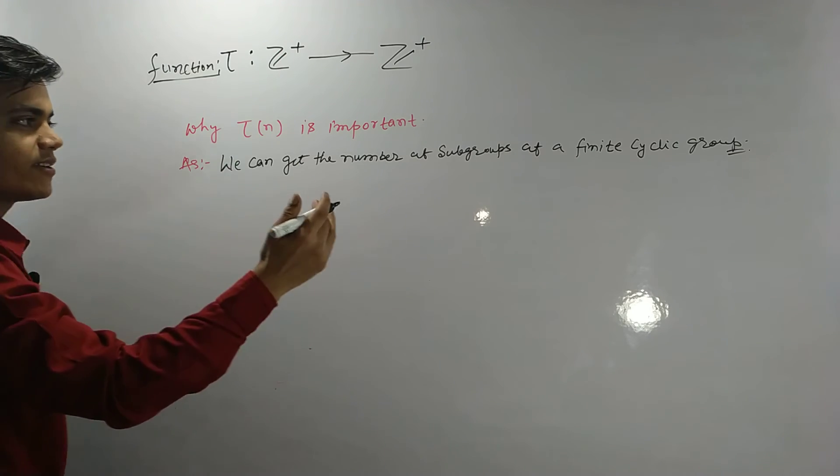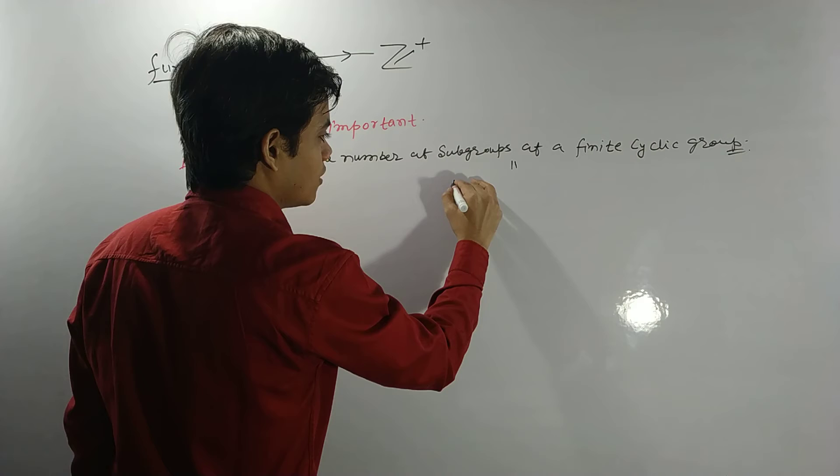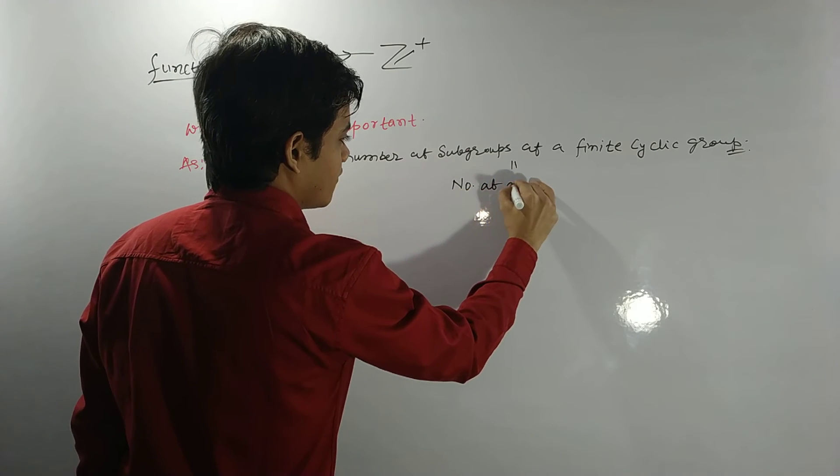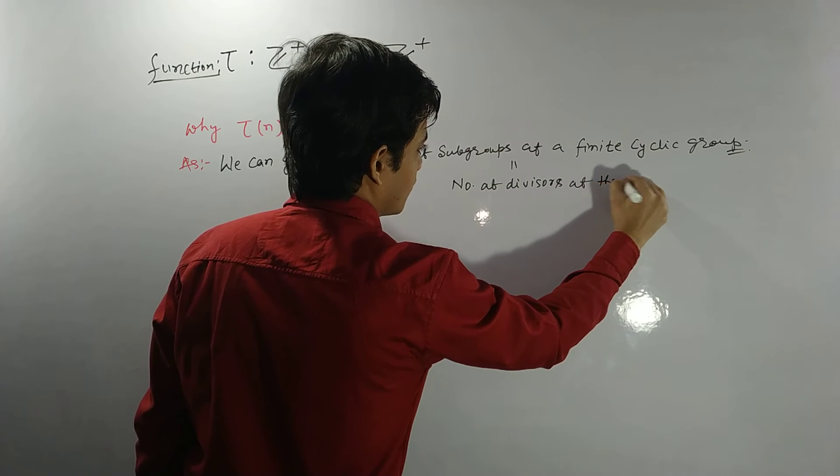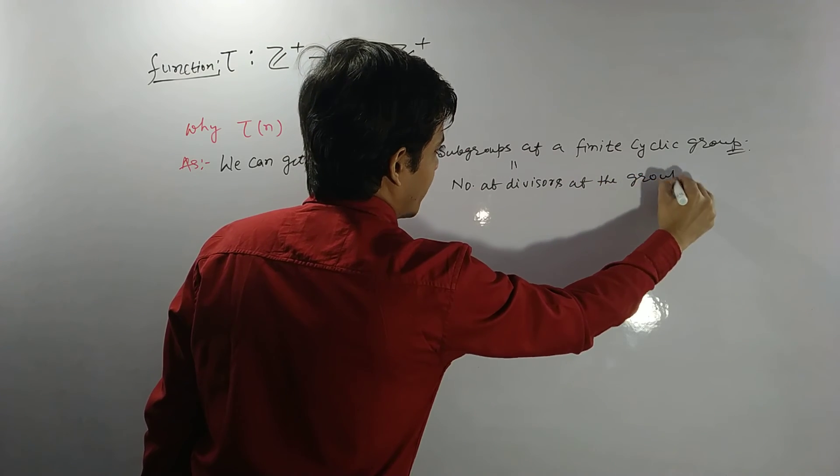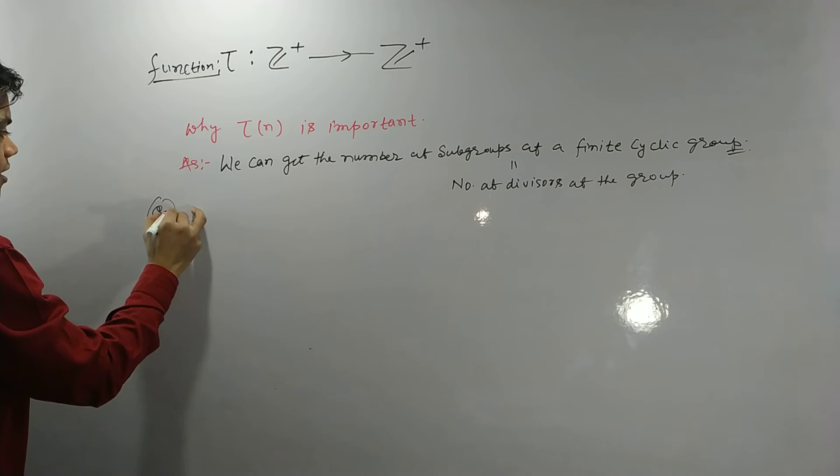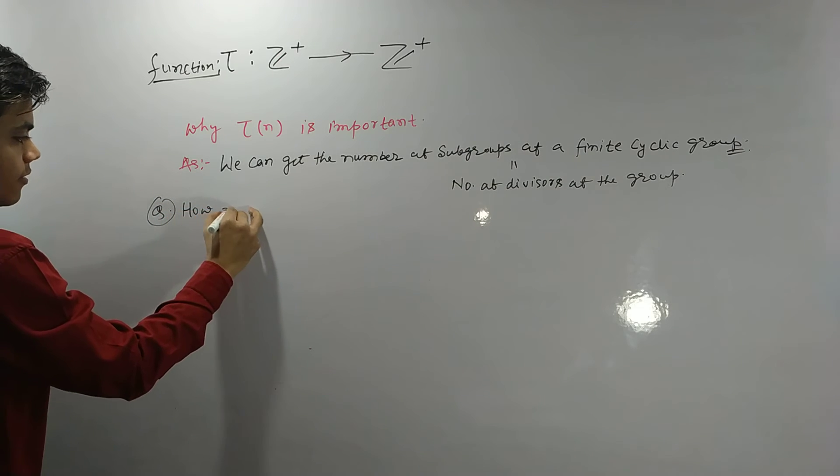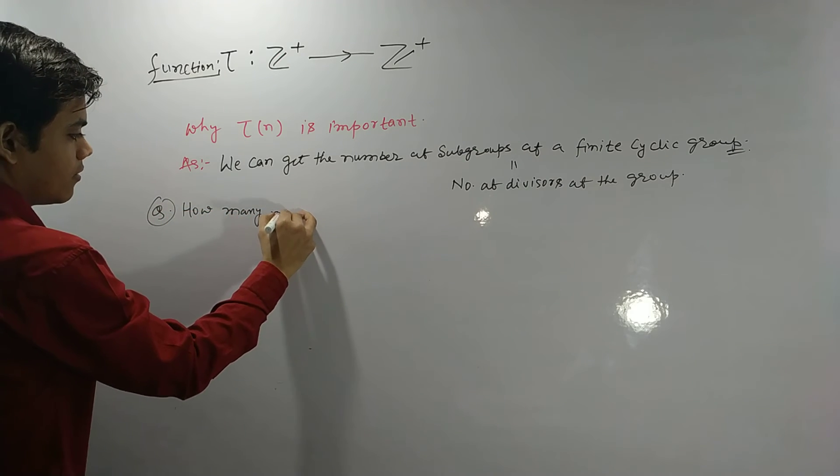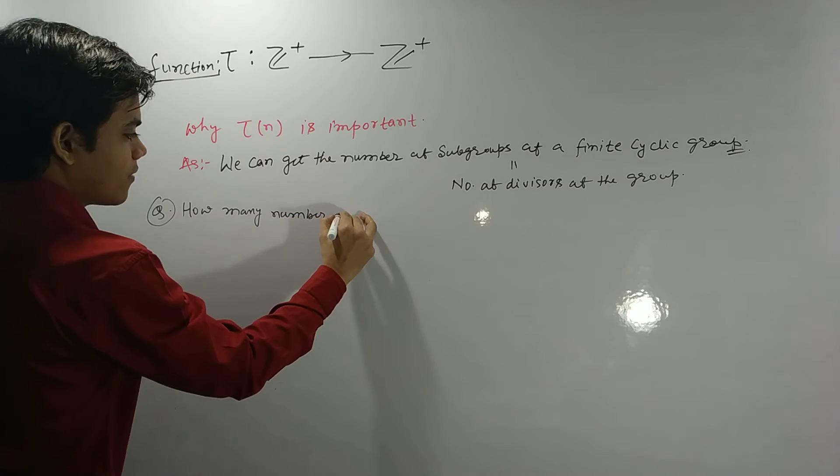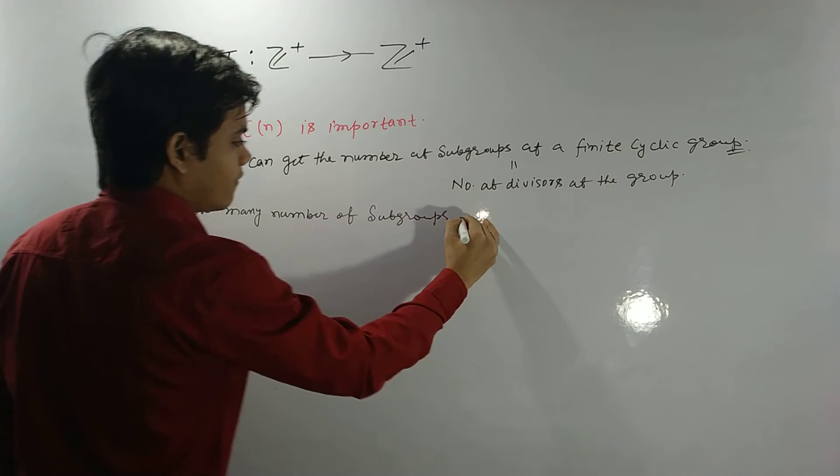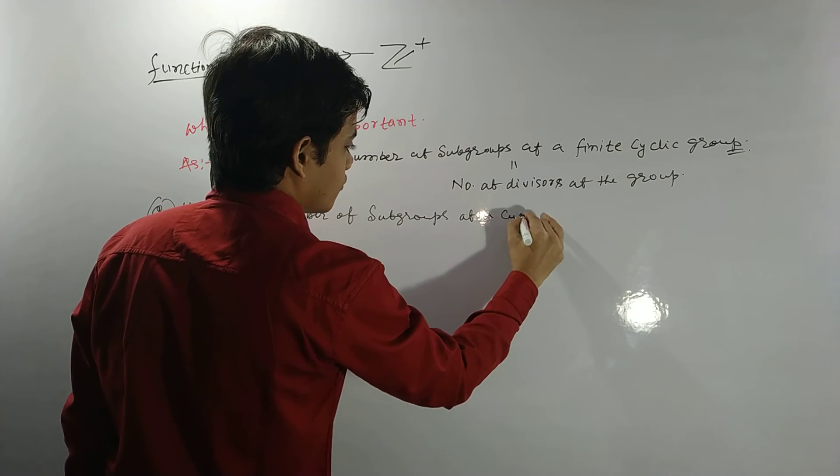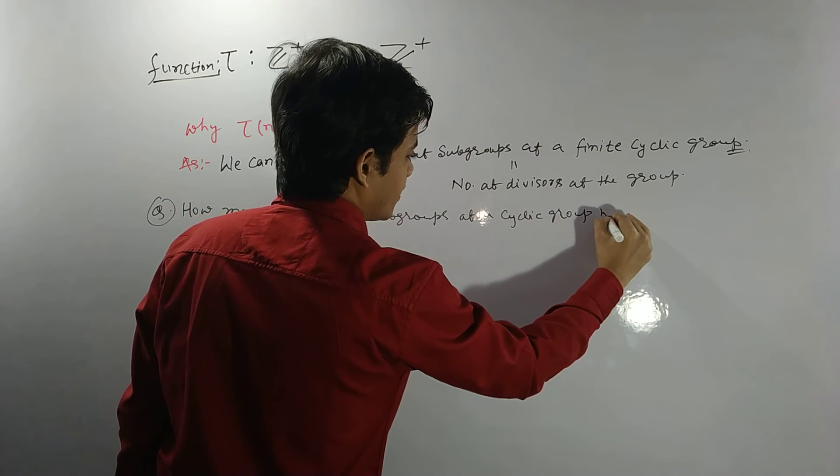And why? Because the number of subgroups of a finite cyclic group equals the number of divisors of the group. So now my next question is...